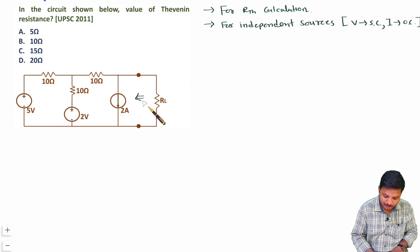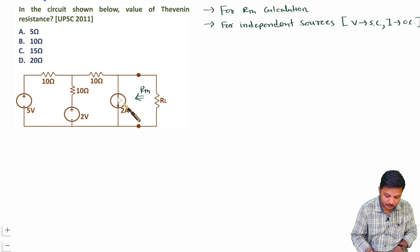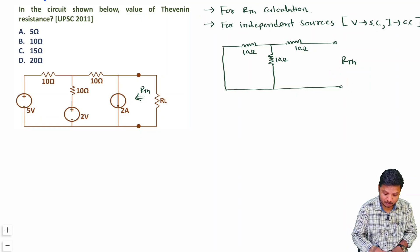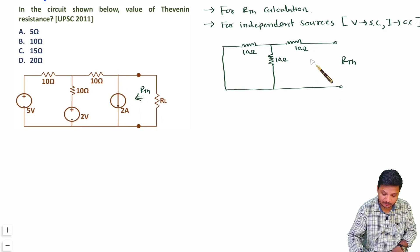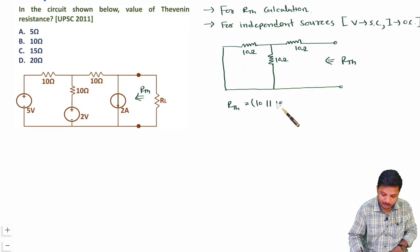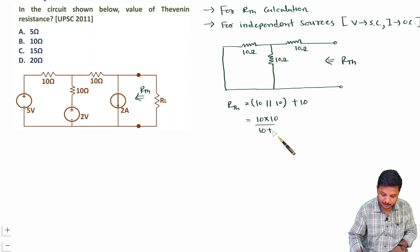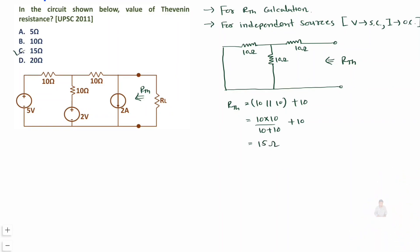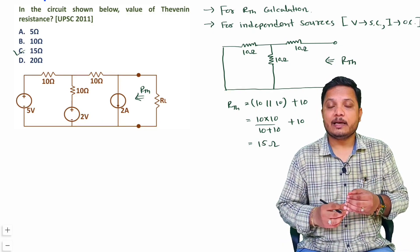We need to measure RTH, since there is a load resistance. I'll short the 5V and 2V sources and open-circuit the 2A current source, then redraw the circuit. After shorting the voltage sources and open-circuiting the current source, RTH is simply 10 parallel with 10, in series with 10 ohms. That gives 10×10/(10+10) + 10 = 5 + 10 = 15 ohms. So the correct answer is 15 ohms.